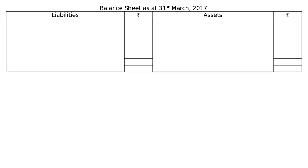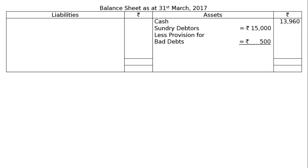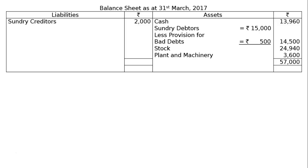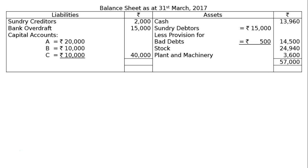Balance sheet as at 31st March 2017. Asset side: cash Rs.13,960 (old cash plus C's contribution, adjusted for capital cash movements); sundry debtors Rs.15,000 less new provision for doubtful debts Rs.500 = Rs.14,500; stock new revised value Rs.24,940; plant and machinery Rs.36,400 less 10% reduction; total Rs.57,000. Liability side: sundry creditors Rs.2,000, bank overdraft Rs.15,000, capital accounts — A Rs.20,000, B Rs.10,000, C Rs.10,000 (total Rs.40,000); grand total Rs.57,000. This is the final answer.